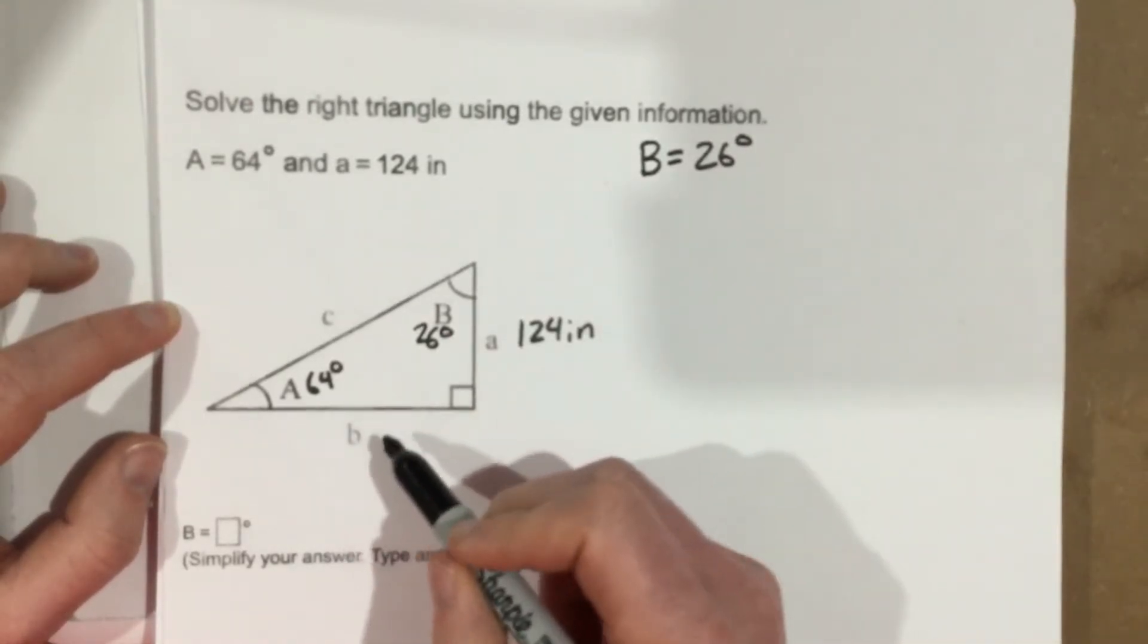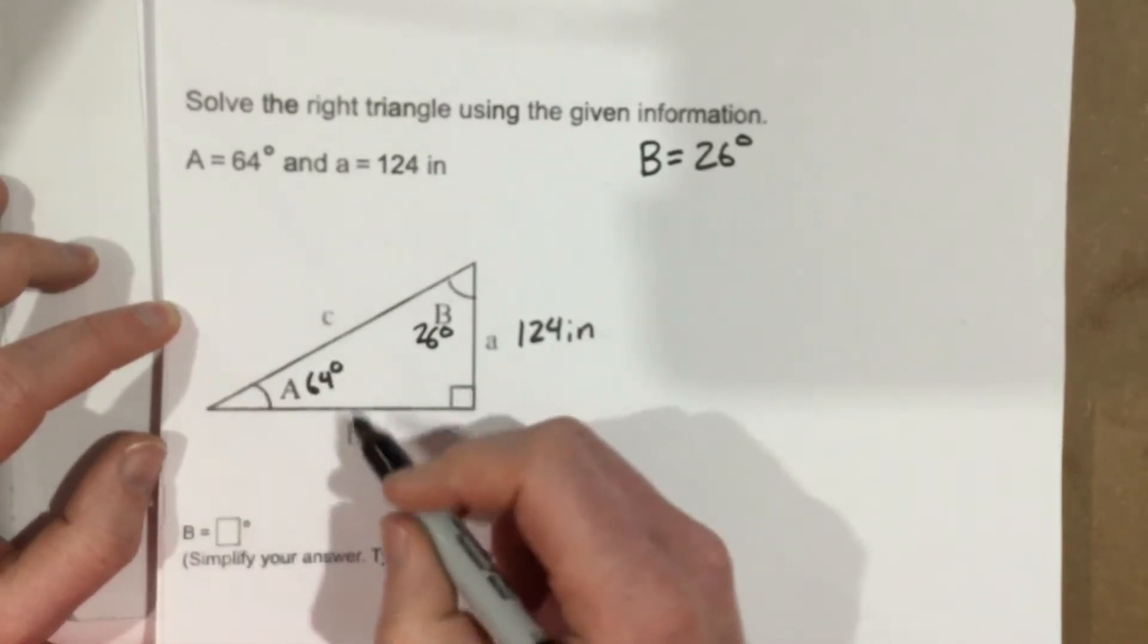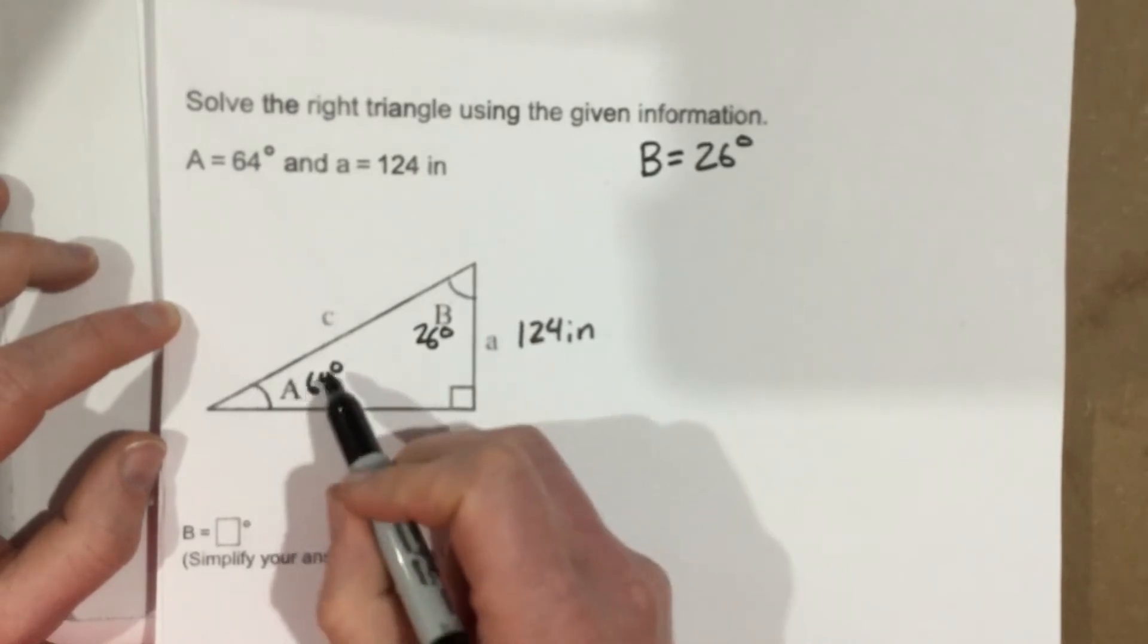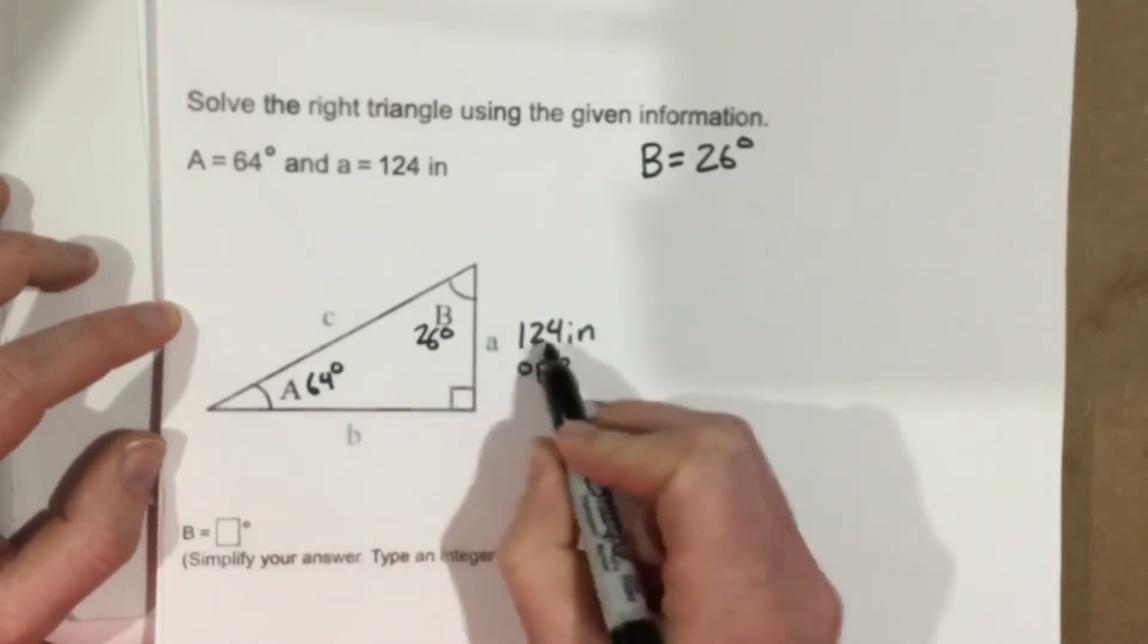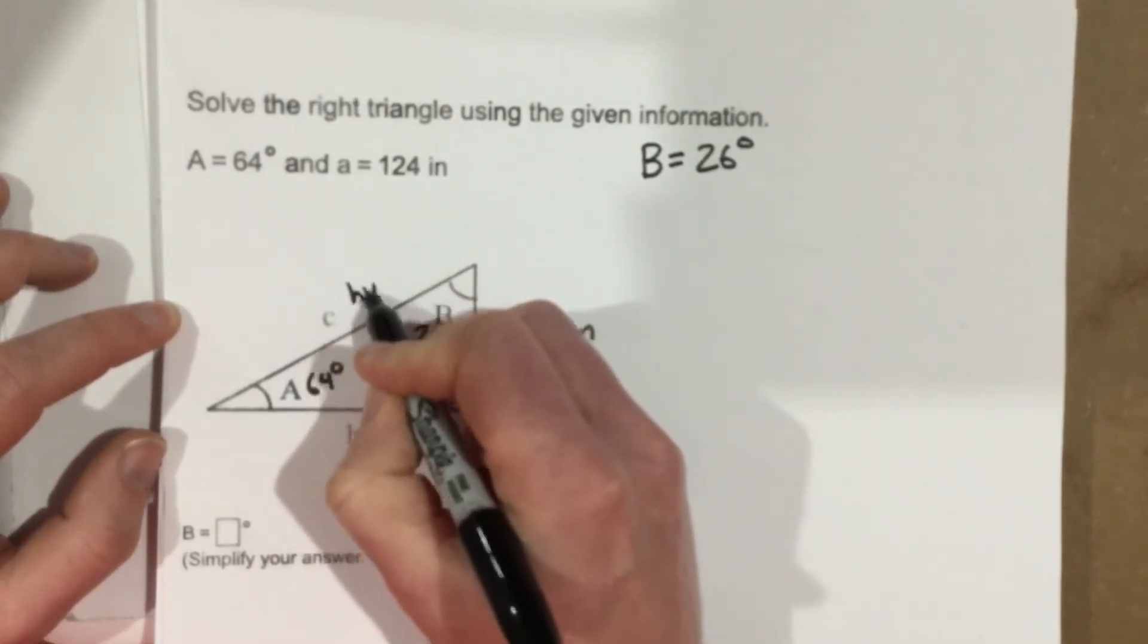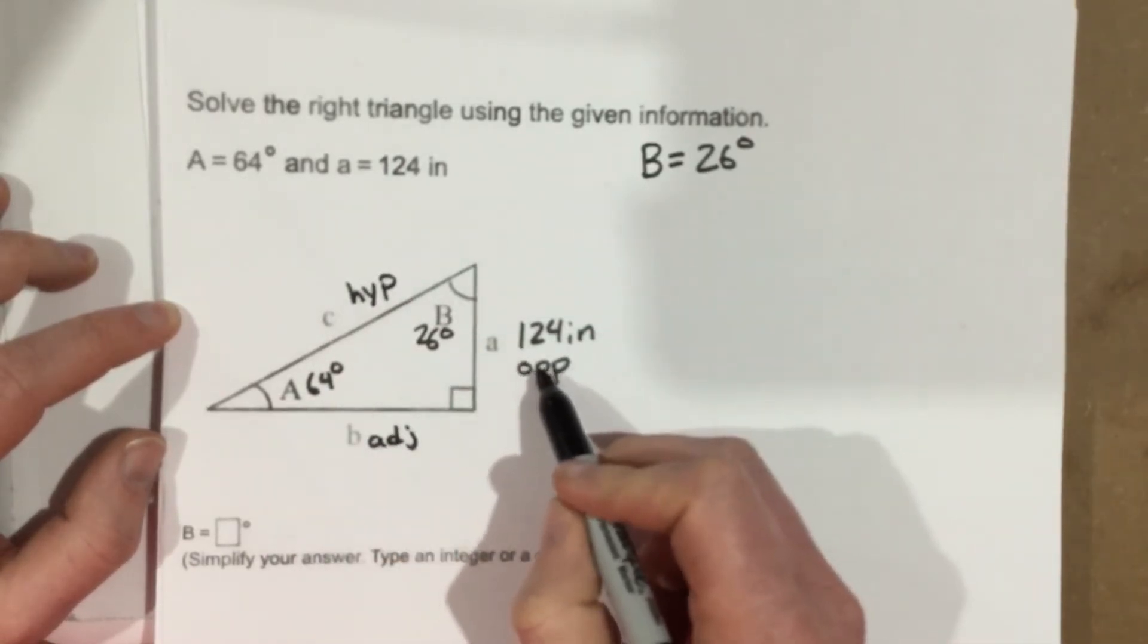Now we've got to go about finding B and C. So let's start by finding B first. If I want to find B first, I'm going to use this angle 64 degrees, and I'm going to use 64 the whole time. So that's my opposite side, because that's the opposite of 64 degrees. This is my adjacent side, and this is my hypotenuse.